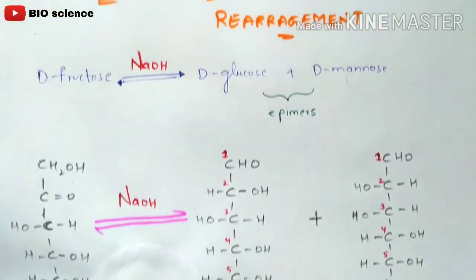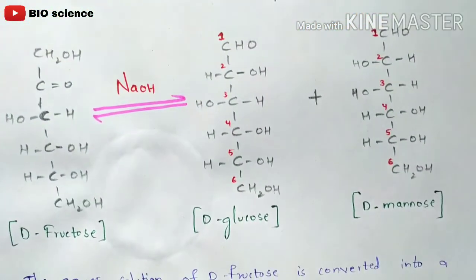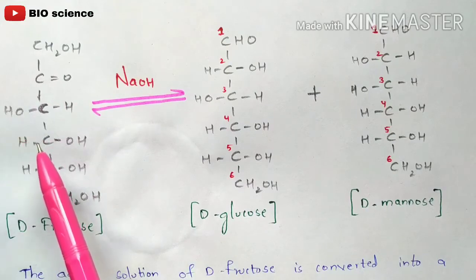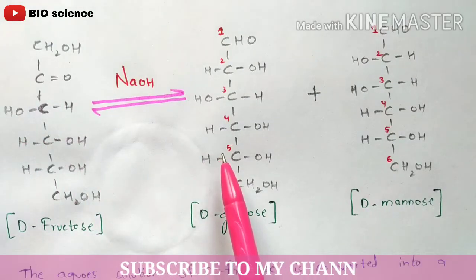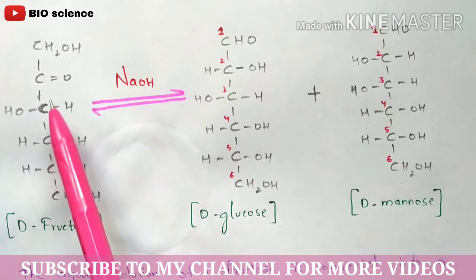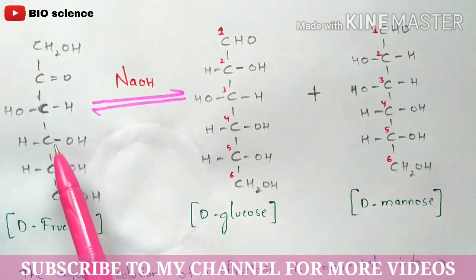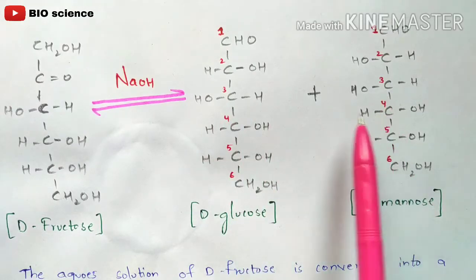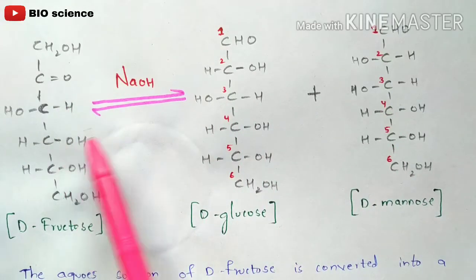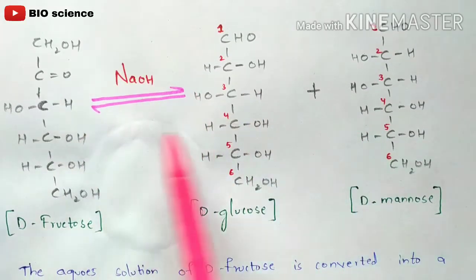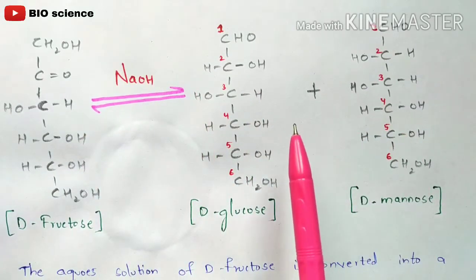In structure form, this is D-fructose. D-fructose is a six-carbon compound, D-glucose is a six-carbon compound, and D-mannose is also a six-carbon compound. This is the structure of fructose, this is the structure of D-glucose, and this is the structure of D-mannose. This fructose gets converted to D-glucose and D-mannose with the help of NaOH — this is the Lobry-de Bruyn-van Eckenstein rearrangement.